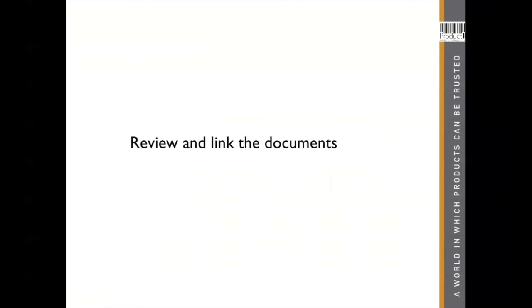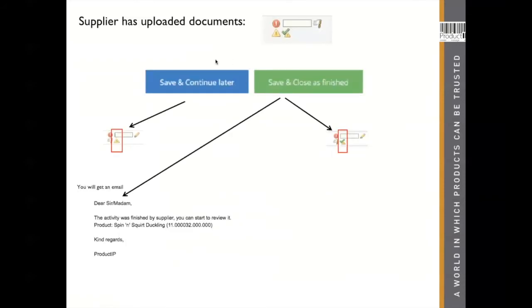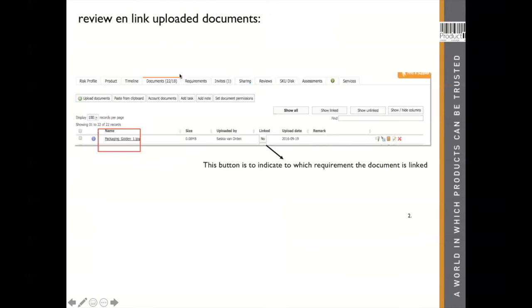Review and link the documents. When your supplier has uploaded all the documents, at the end he has two options: he can save and continue later, or save and close — it's finished. On your side, a white flag means new documents in your technical file and an open task because it's still not closed. A closed task means it's done. Also, if you have sent out the invite, you will receive in your own email account an email that you can review the document.